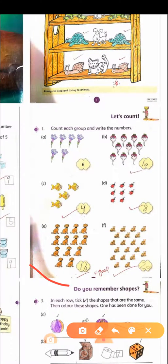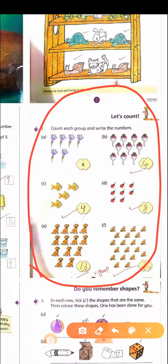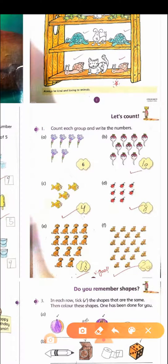This is page number three. On this page they again ask to count each group and write the numbers. Ask the children to count the things and write the number in the bubble.